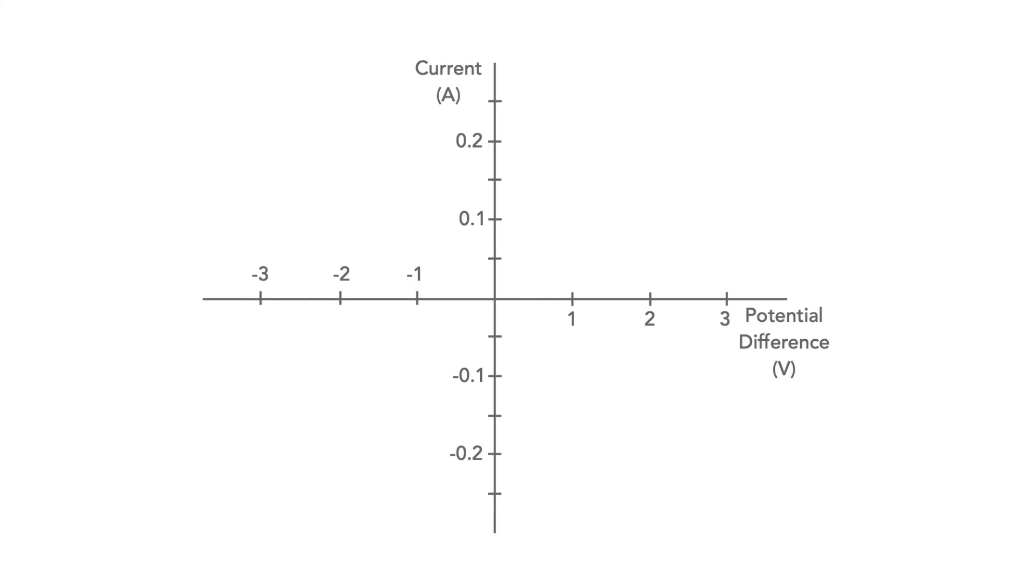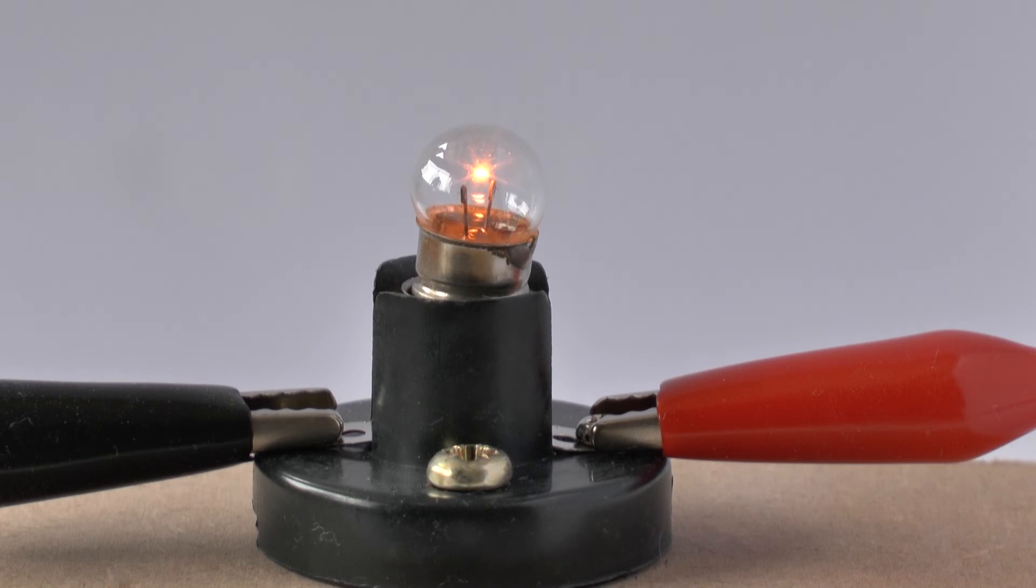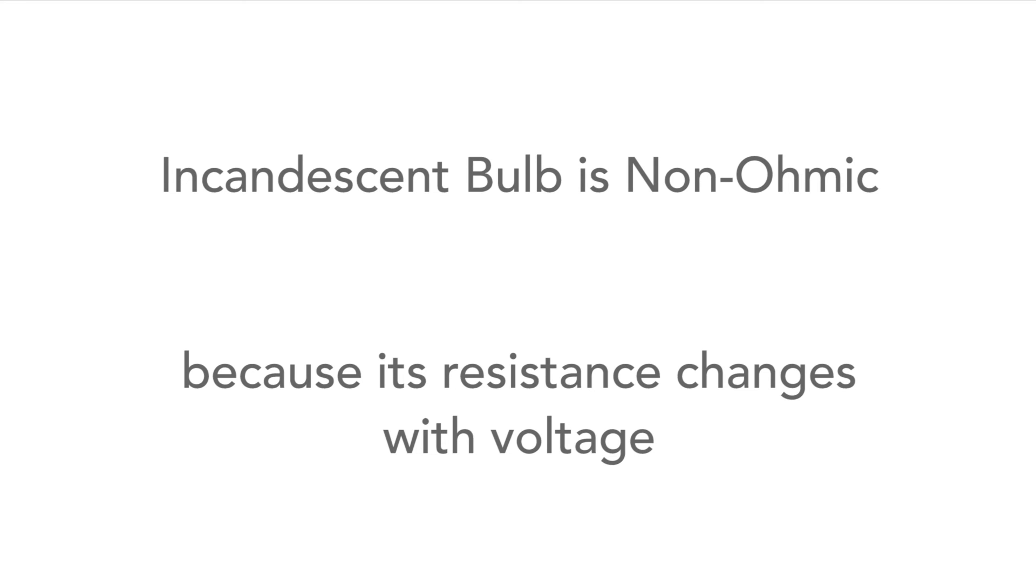From the readings we took, we can plot the current voltage curve, and from this we can see that the resistance increases as the current increases. This results from the temperature increase in the filament of the bulb. This means that an incandescent bulb like this is non-Ohmic because its resistance changes with the applied potential difference.